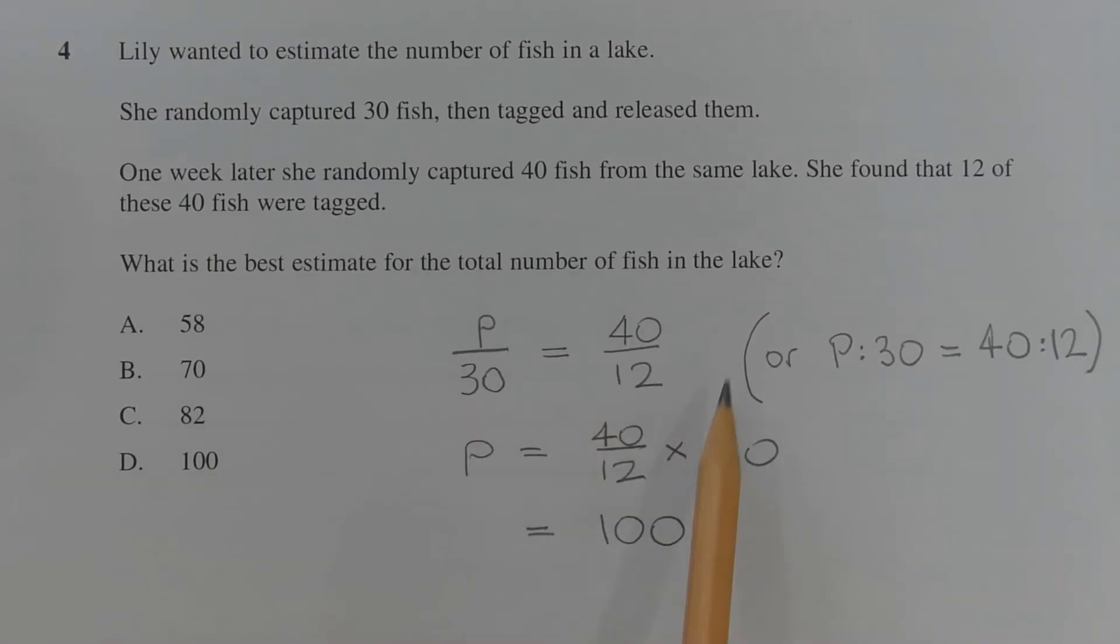Solving this equation for p by multiplying both sides of the equation by 30, we get p is equal to 40 over 12 times 30, which equals 100. Therefore, the answer is option D.